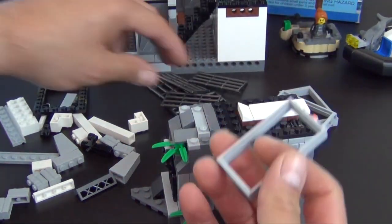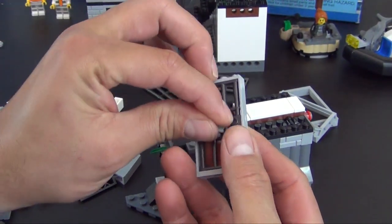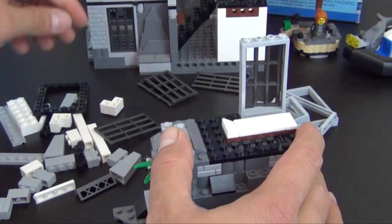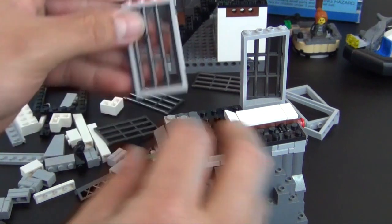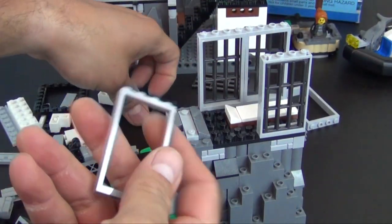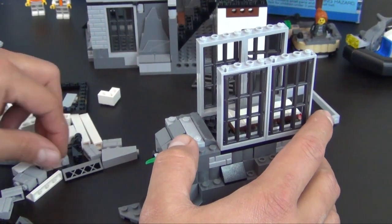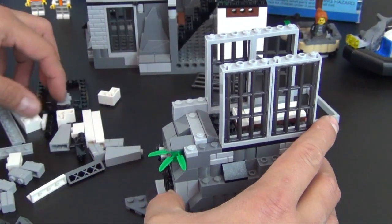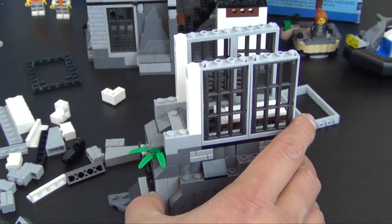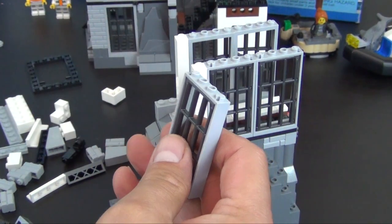All right, next we have a jail cell door. Goes right there. And we have three just regular panels with the jail bars on them.